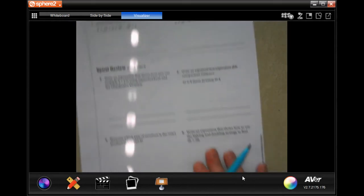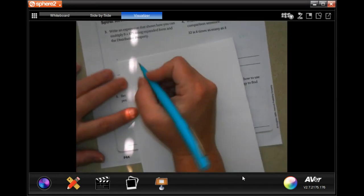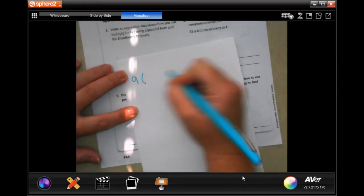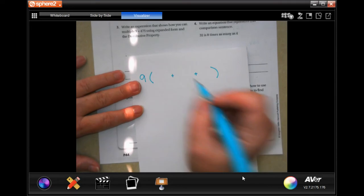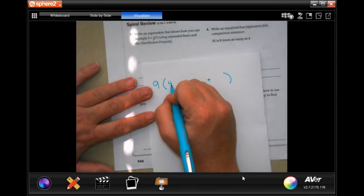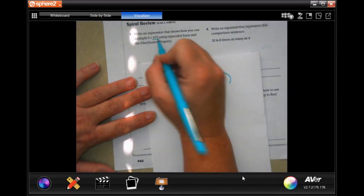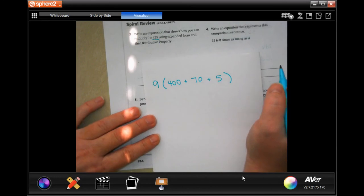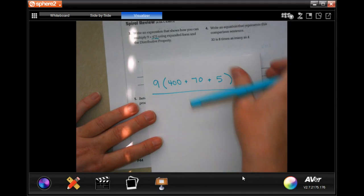We are going to go to number 3 on Spiral Review, and it says to write an expression that shows how you can multiply 9 times 475 using expanded form and distributive property. So 9. There we go. Now we're going to do expanded form. Well, that's worth 400. That's worth 70, and that's worth 5. That is your expression. Boom. Done.